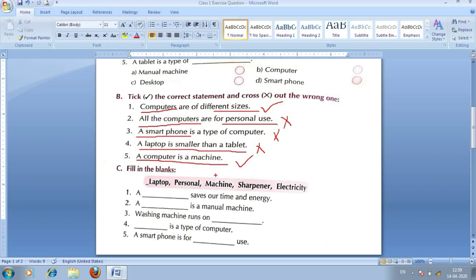Let us see next section. C, fill in the blanks. It means, rikt sthanoh ko bharay. Question no. 1. A dash saves our time and energy. Apna samay aur urja ko bachata hai. Kya bachata hai? Machine. Kya hojaye ga, babu, hamara ek number mein? Machine hojaye ga. Yahaan pe haam likh dhenge. Ek number hamara jo right hai. Machine. Yahaan pe haam fill kar dhenge machine. Aap apne notebook mein yaha machine likh dijiye ga.